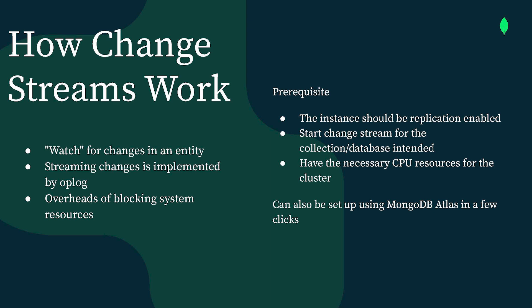The prerequisite for a Change Stream to work is that the instance on which you are applying Change Stream should have replication enabled, because only then you would have the op-log on which Change Stream operates. You would then start Change Stream on that particular collection or database, and just ensure the necessary CPU resources are allocated for the cluster. The same thing can also be performed on MongoDB Cloud Atlas platform without worrying about these prerequisites, as MongoDB Atlas provides Change Stream functionality with just a few clicks. The only overhead there is the cost associated with Change Stream being performed on your MongoDB Atlas cluster.